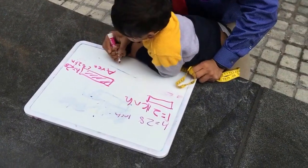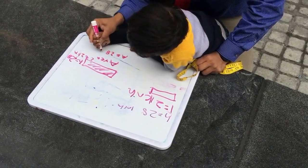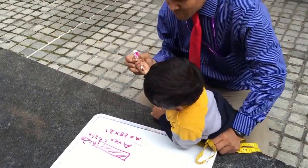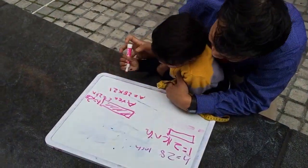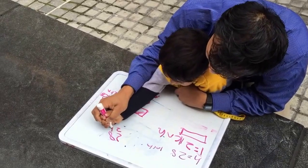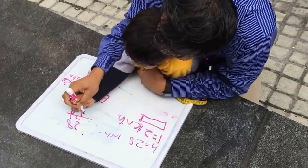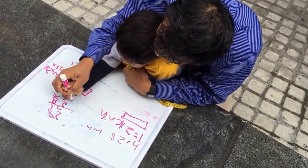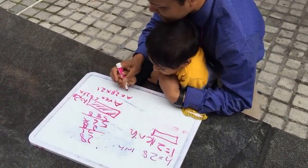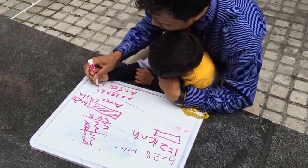Now we're gonna write the area. Area is 28 times 21. 28 times 21 is how much? We're gonna do the multiplication. 28 times 21. So it's 588. Area is 588 square inches.